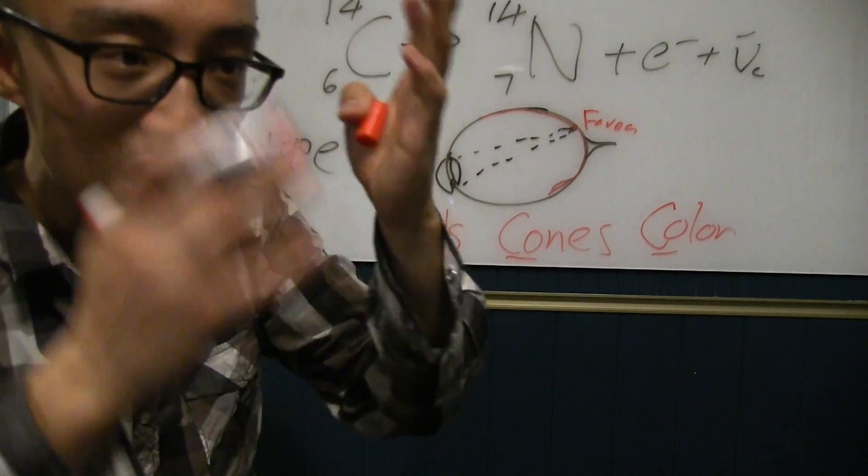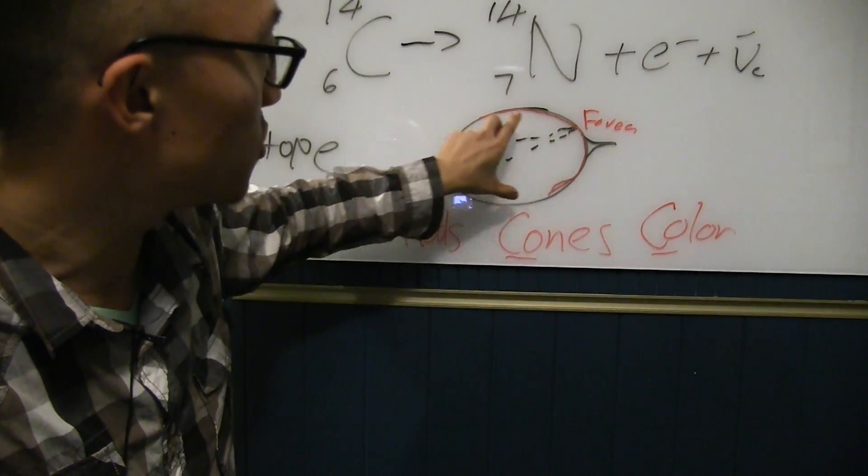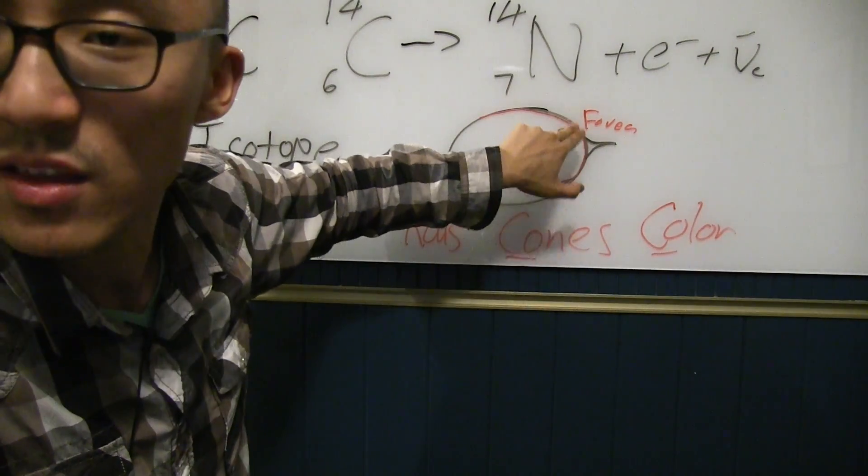This is where your cones are concentrated. When you really need to focus in the day, like, this is where shit happens. But at night, the reason why you can't see as clearly, one, because the rods are not meant to see as much detail as the cones. But, two, not everything is getting concentrated in the fovea.